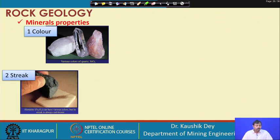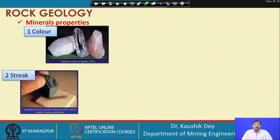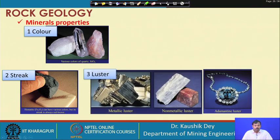The next important property is streak. The reason streak is discussed alongside color is that two different minerals may share the same color but have different streaks. Streak is the color of the line left when you scratch the mineral against a streak plate. A common example: to distinguish chalcopyrite from gold ore (anam oxide), if you streak both, the gold ore gives a golden streak whereas chalcopyrite gives a black streak. So streak is an important identifying property even when colors look similar.